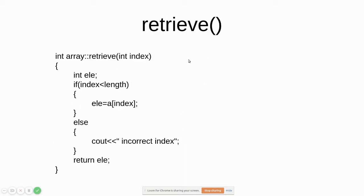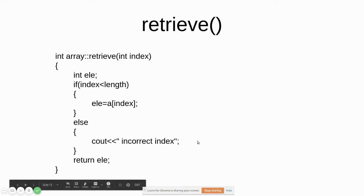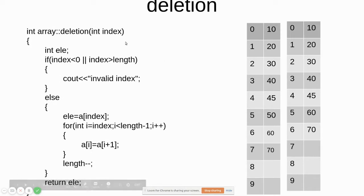For retrieve, we extract the value at a given index. We check whether the index is less than the length; if the index is out of range — for example length is 6 but we try to access index 7 — it gives an error. If the index is valid, we set a local variable element equal to a[index] and return it to the calling program; otherwise it returns an incorrect index message.